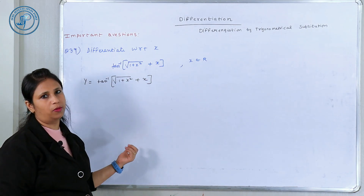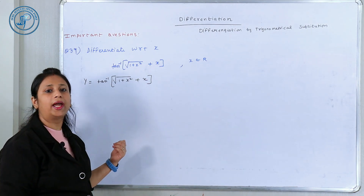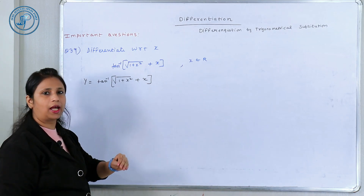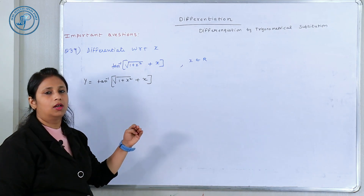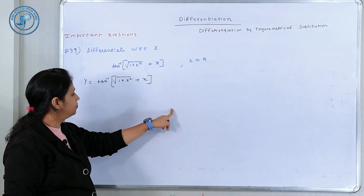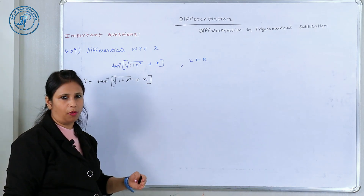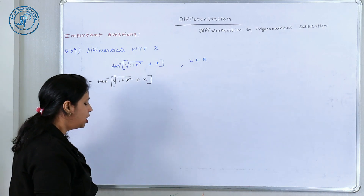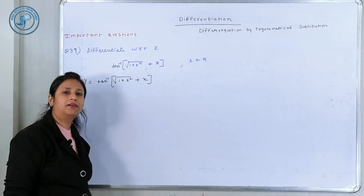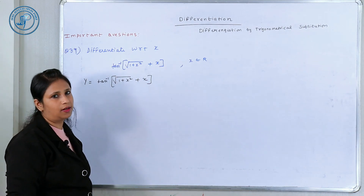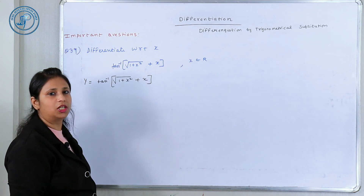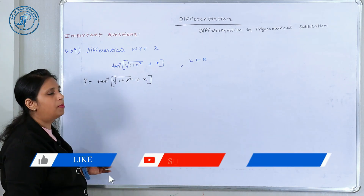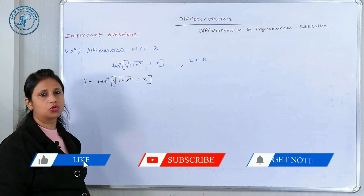If the expression doesn't fit double or triple angle, then we have the 6 formulas, which are important. These involve 1 + sin θ, 1 − sin θ, 1 + cos θ, 1 − cos θ, sin θ, and cos θ. This is what I have already discussed in previous episodes.